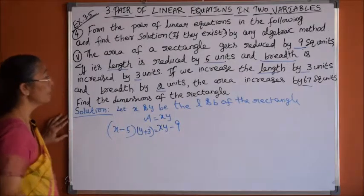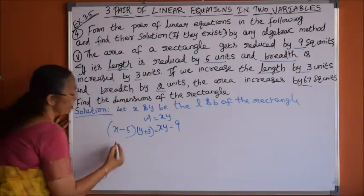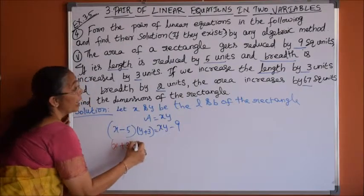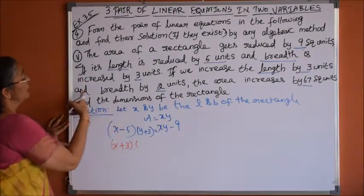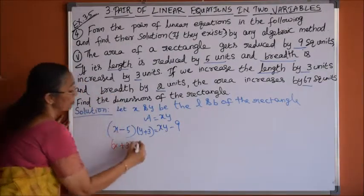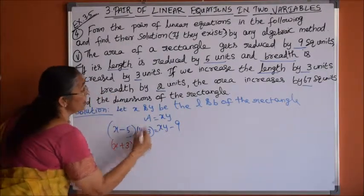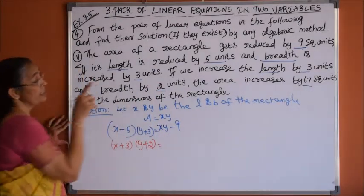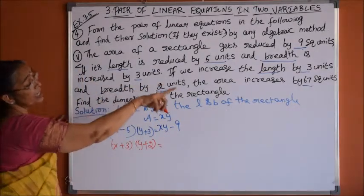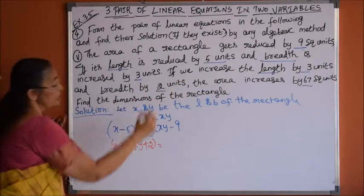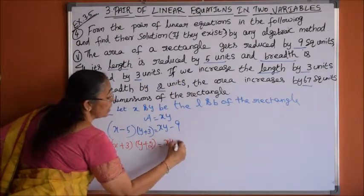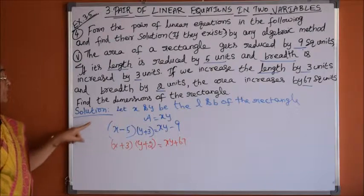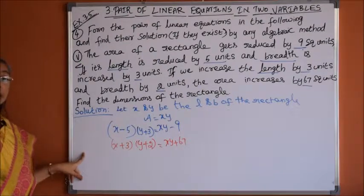Second condition: if we increase the length by 3 units, x plus 3, and increase the breadth by 2 units, y plus 2, then the area is increased by 67 units, so (x plus 3)(y plus 2) equals xy plus 67.